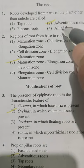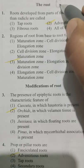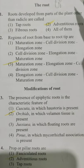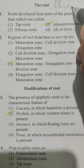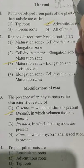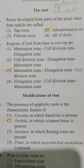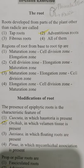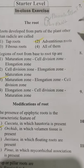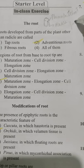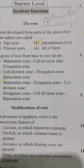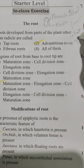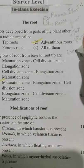When a seed germinates, we can find the presence of two embryonic axes — the radicle and the plumule. The plumule develops into the shoot, whereas the radicle elongates to form the root. There are three different kinds of roots: tap roots, fibrous roots, and adventitious roots.